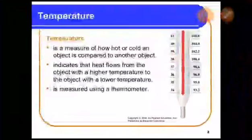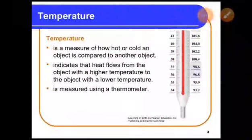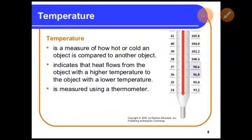Now, what is temperature? Temperature is a measure of how hot or cold an object is as compared to another object. It indicates that heat flows from the object with the higher temperature to the object with the lower temperature. That means heat will always flow from a hotter object towards a cold object, and it is measured using a thermometer.